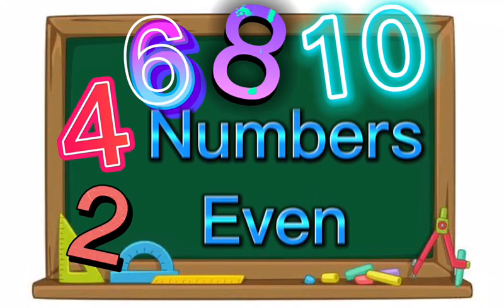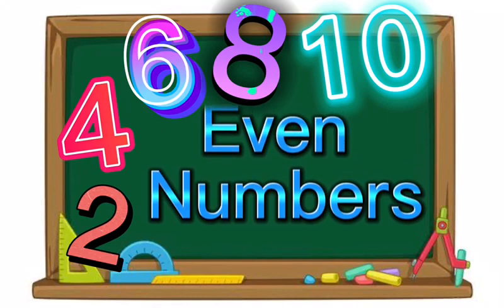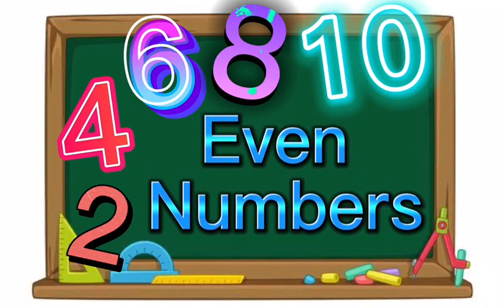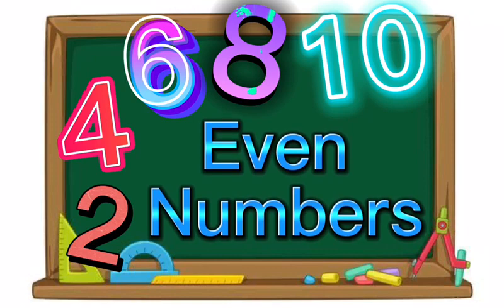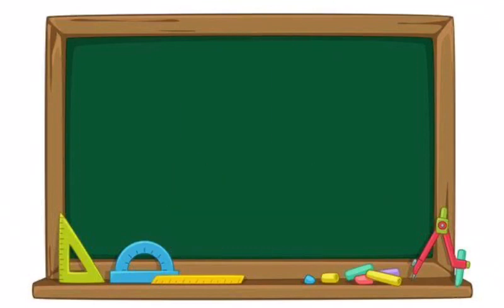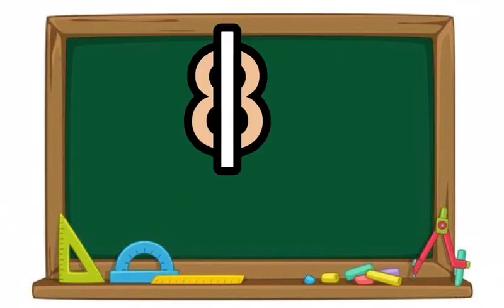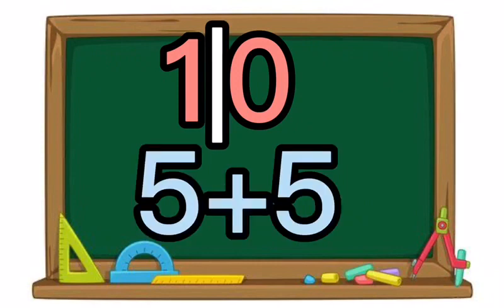In other words, even numbers are easily divisible by two halves. Six is an even number because it splits equally in half. Eight splits equally in half. Ten also splits equally in half.